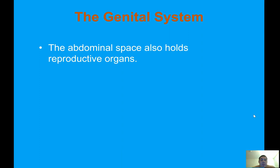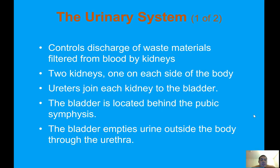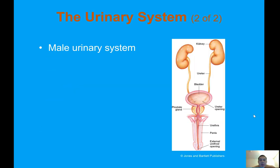The genital system: the abdominal space also holds reproductive organs. The urinary system controls discharge of waste materials filtered from blood by the kidneys. There are two kidneys, one on each side of the body. Ureters join each kidney to the bladder, which is located behind the pubic symphysis. The bladder empties urine outside the body through the urethra. In the male urinary system, the kidneys and ureters bring urine down to the bladder, past the prostate gland, and out through the urethra.